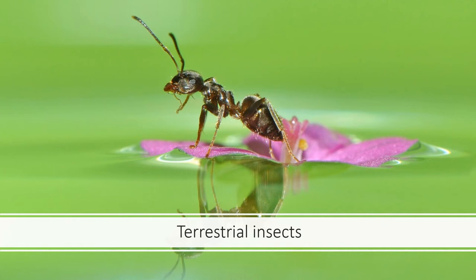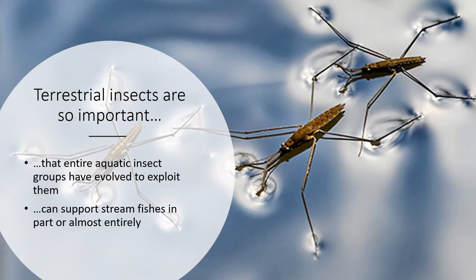Another really important contributor of allochthonous sources in streams is terrestrial insects. A major contributor to streams is little things like ants dropping on the surface. This is so important that some aquatic insect groups have evolved to exploit terrestrial insects — a good example is water striders, which skim around on the surface and pick off terrestrial insects that fall in. They are attracted to disturbances at the surface, pierce them with a tube, and suck the material out, sort of like a spider.